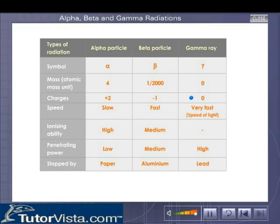The gamma rays are not made up of any particles. They have the least ionizing power. They are electromagnetic radiations.